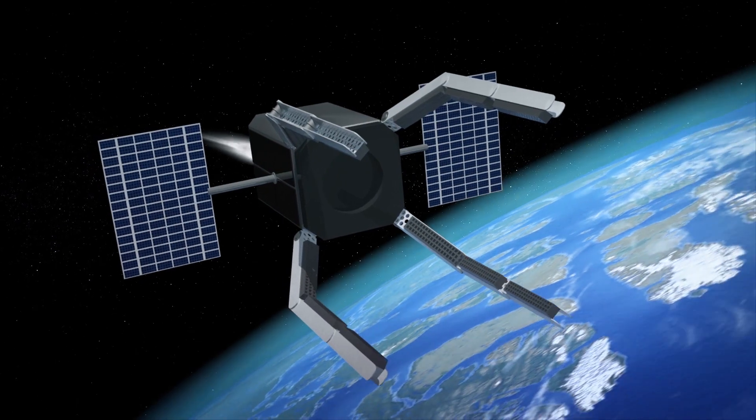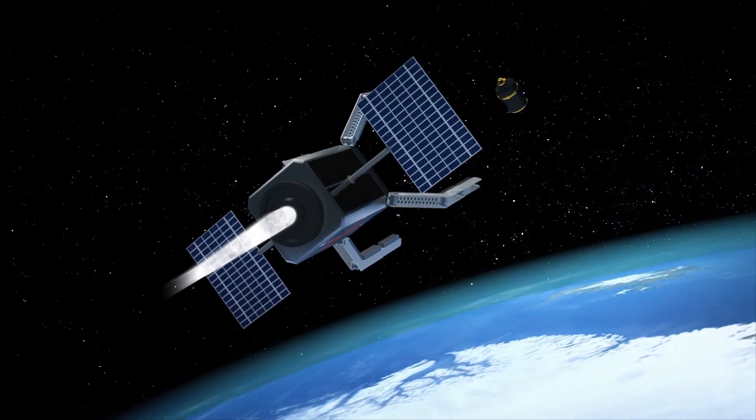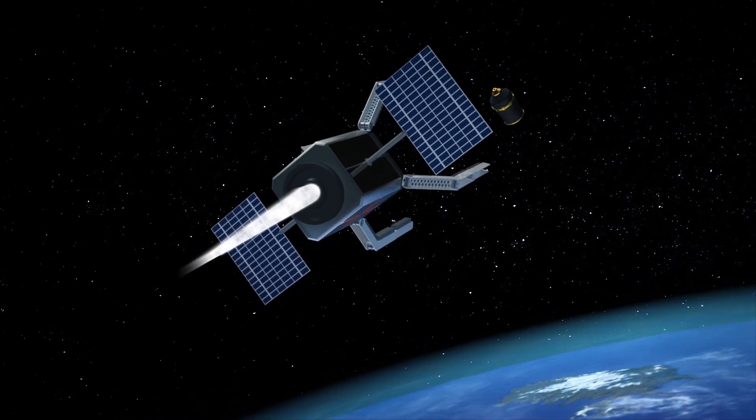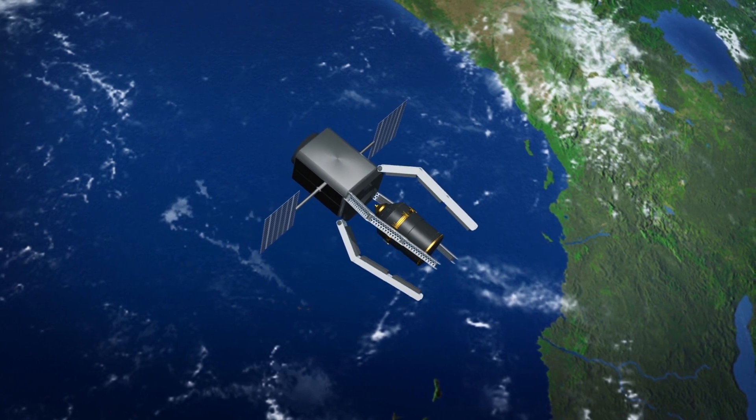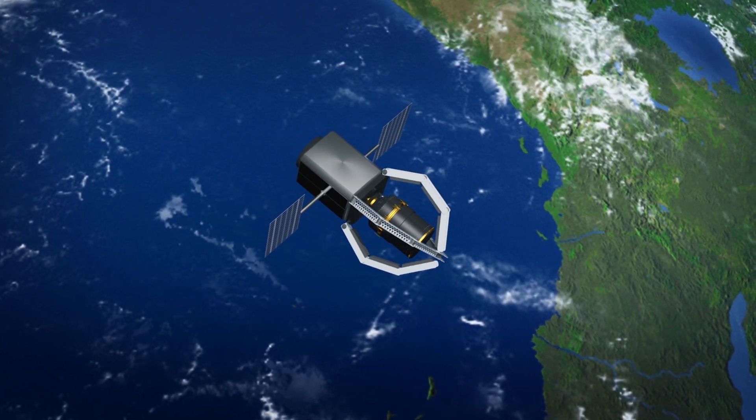ClearSpace1 will be launched into a 500 kilometer orbit to undergo testing before it moves up to Vespa's higher orbit, which sits at an altitude of 660 by 800 kilometers. Once in position, ClearSpace1 will utilize its quartet of arms to catch Vespa under the ESA's supervision.